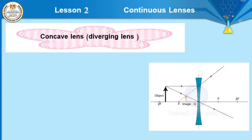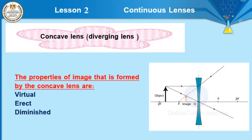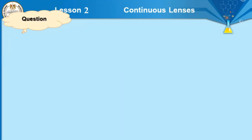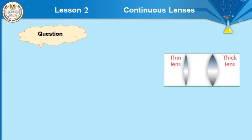Concave lens forms an image that is virtual, erect, and diminished. As we know, concave lens forms only one type of image. When you put the object at any distance in front of a concave lens, it will form an image with properties: virtual, erect, and diminished.